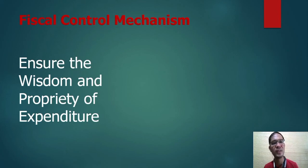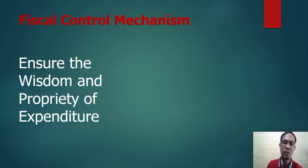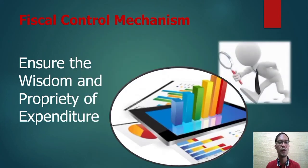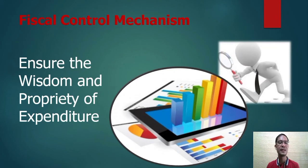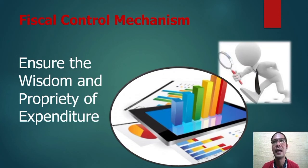We also have the need to ensure the wisdom and propriety of expenditure. Claims for payment of public funds require that legality, prudence, reasonableness, and the morality of the claim or charge should be established. For example, there should be a review of existing contracts and transactions of a project entered by an agency or department.